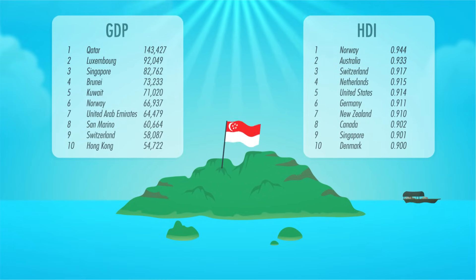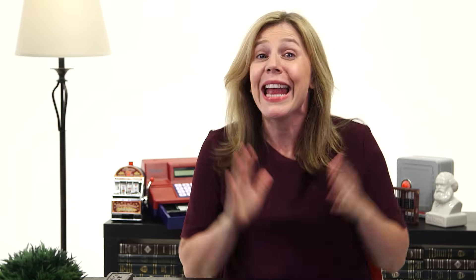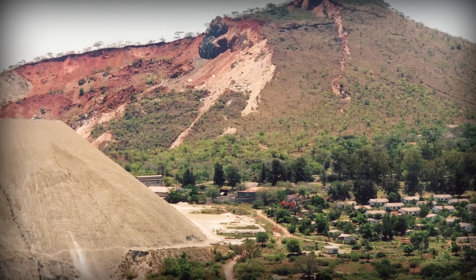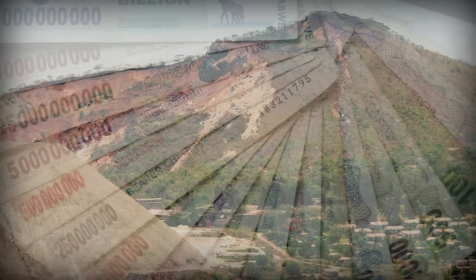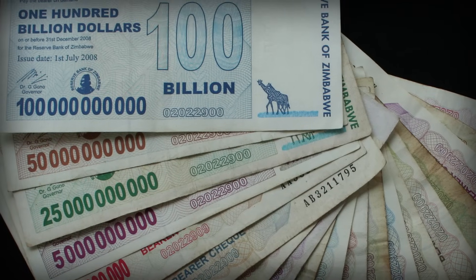Singapore is a teeny tiny island, and Switzerland's main natural resource is cows — and cows are great, but they aren't really natural resources. Zimbabwe, on the other hand, has tons of natural resources like fertile soil, coal, and rare minerals. But their economy is a wreck — 161st in GDP per capita and 156th on the HDI. Their incompetent and corrupt government keeps them poor.